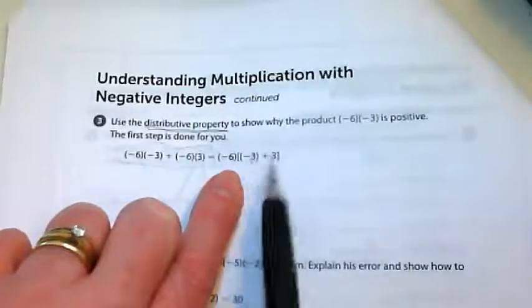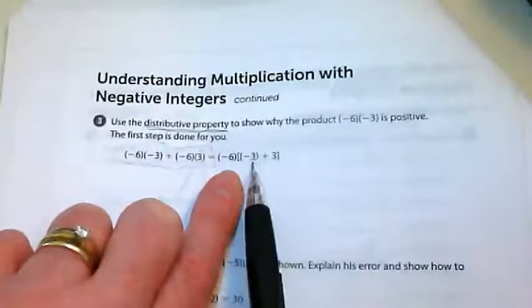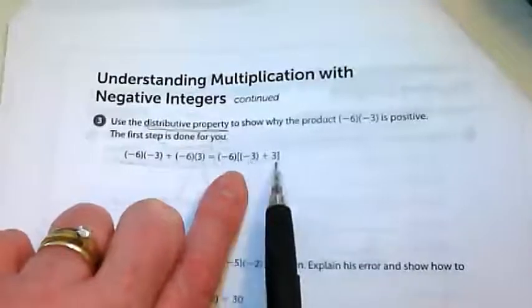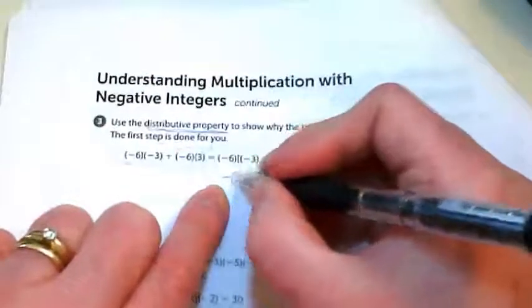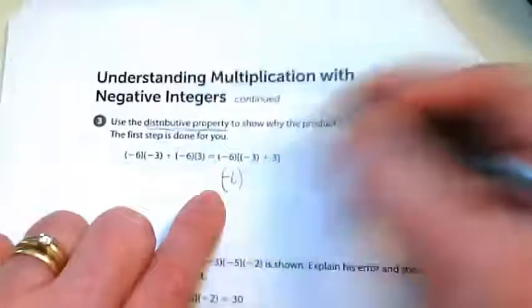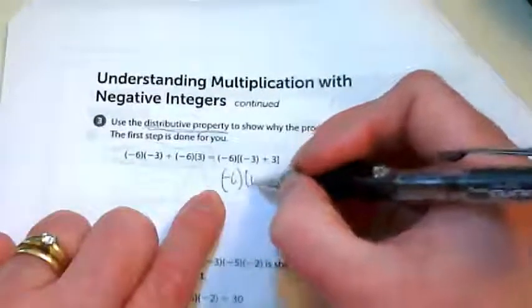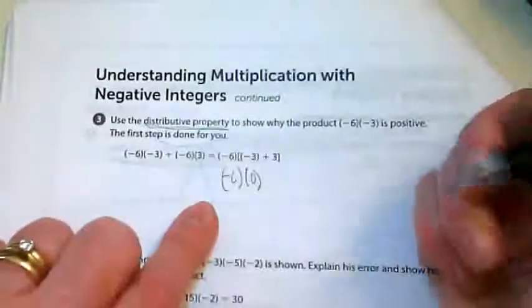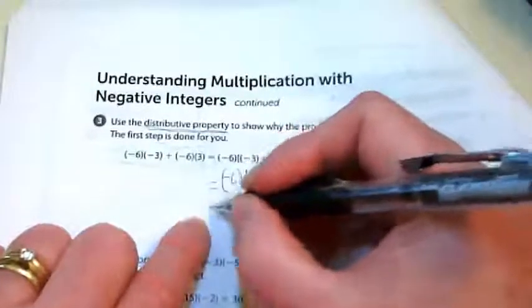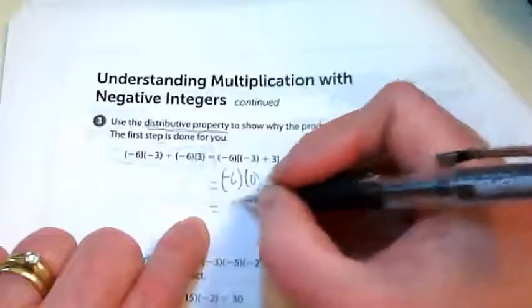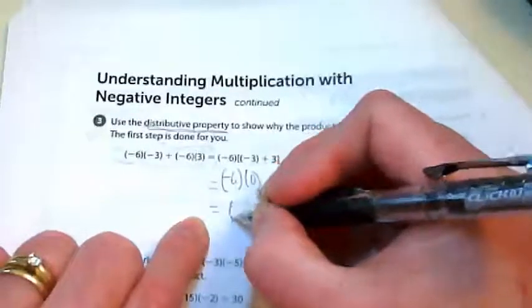Then you do what's in the parentheses. Remember when we've talked about PEMDAS? Negative 3 plus 3 is going to be what? So I would end up rewriting this as negative 6 times 0. And negative 6 times 0 is 0.